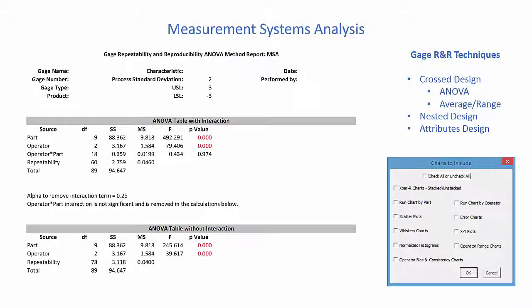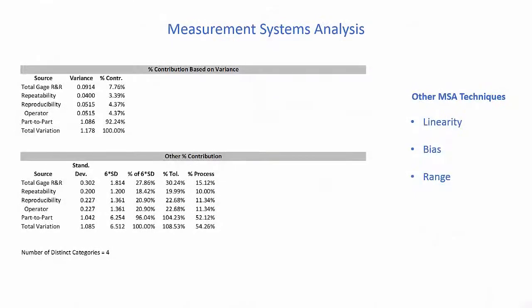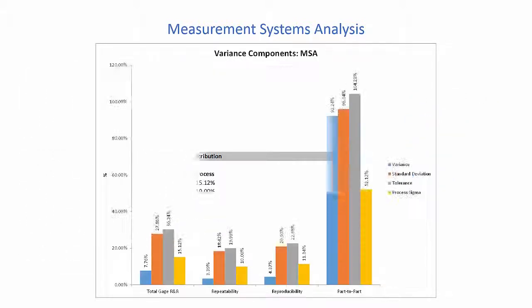Measurement systems analysis, crossed design, ANOVA and the average range method, nested design, attributes, gauge R&R, linearity, bias, and the range method as well.